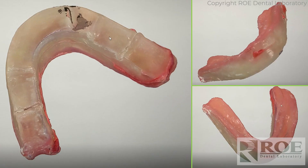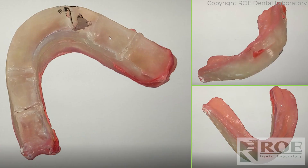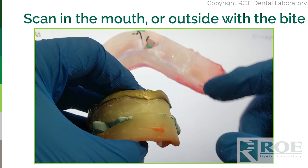On the mandible, it's the same process: scan the intaglio, roll around to the borders, roll around to the facial, and then to the occlusion. In this demonstration we scanned everything — we have the latest Trios here at the laboratory — but if your scanner will not do it, the part to skip is the lingual or the palatal. This is all outside the mouth. If you've captured a bite registration, simply scan outside the mouth and hold it in your fingers to scan.